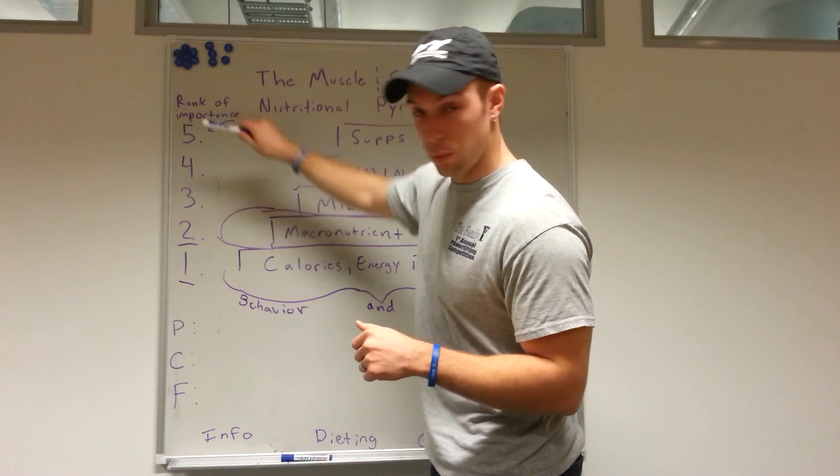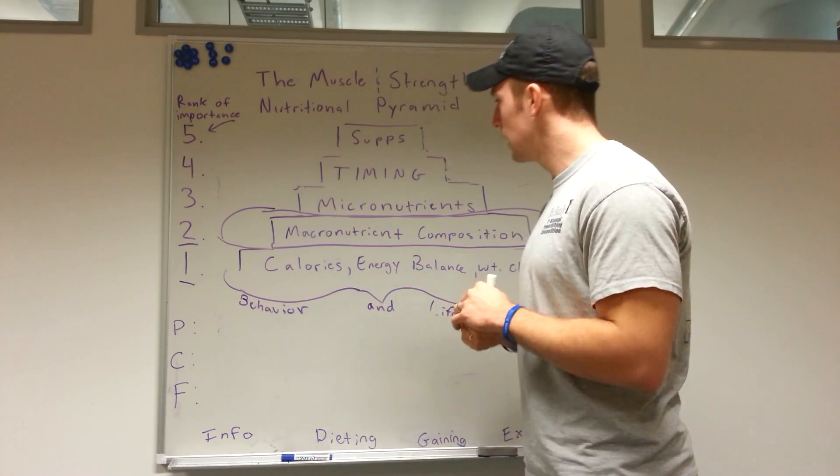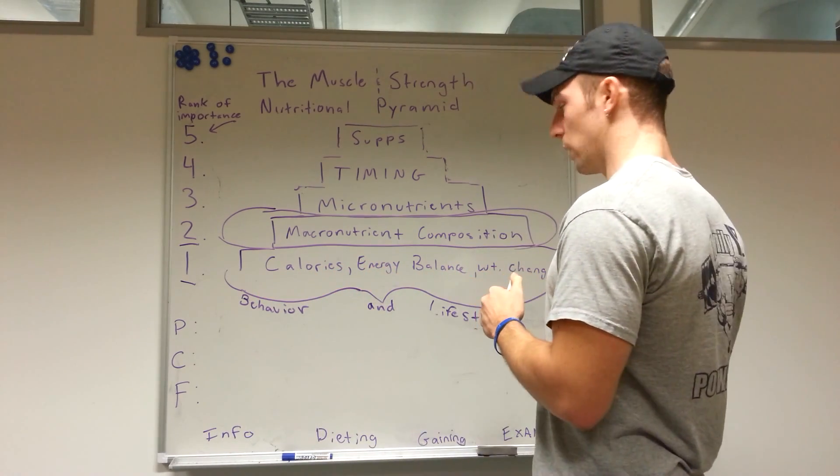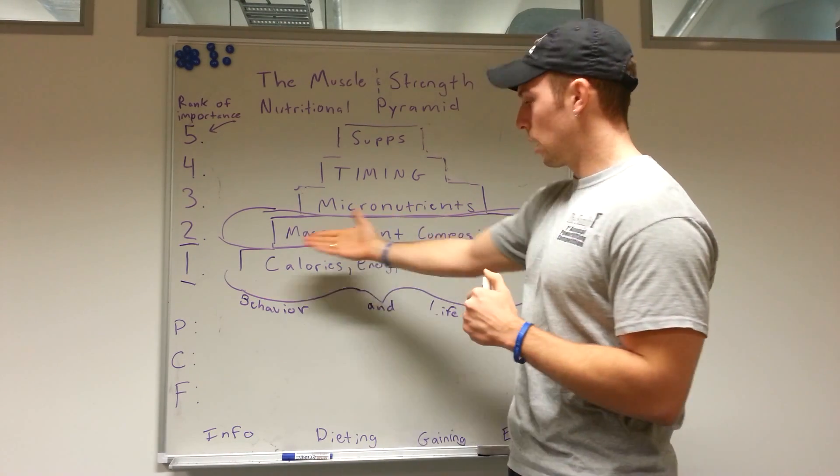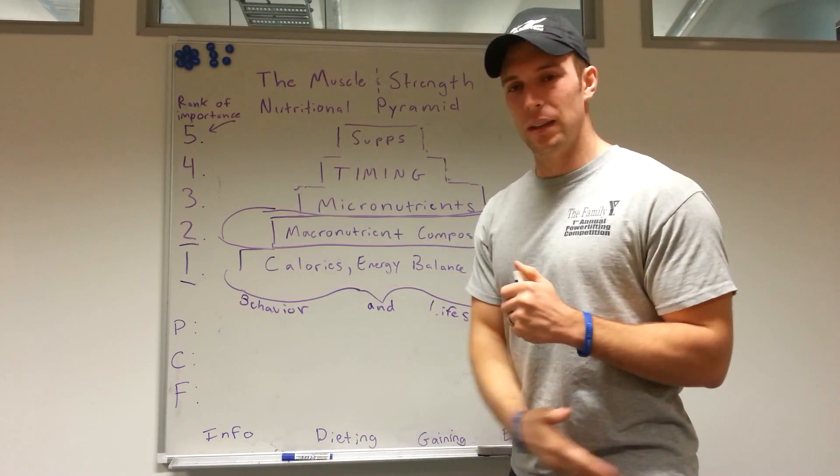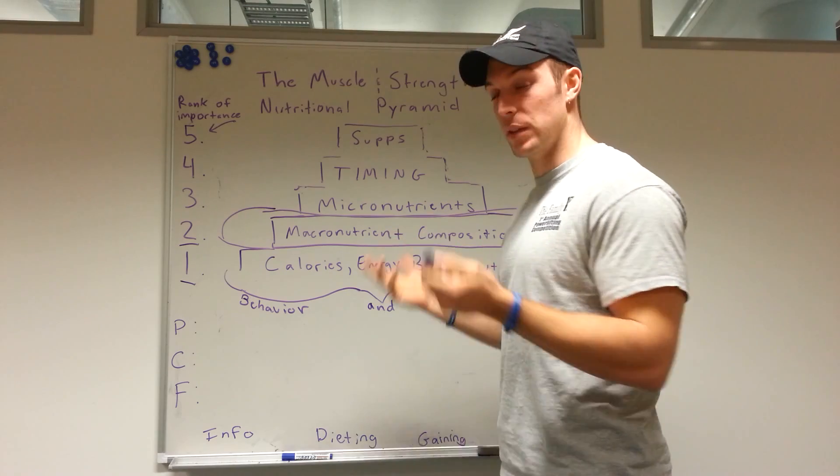So we've got the rank of importance from one, two, three, to four, to five, most to least important. Although they all are important, we just need to have that context and degrees. And here are the actual steps themselves: we have calories, energy balance, and rate of weight change, the macronutrient composition of the diet, micronutrients and minerals, timing, and of course supplements is the least important thing to pay attention to.